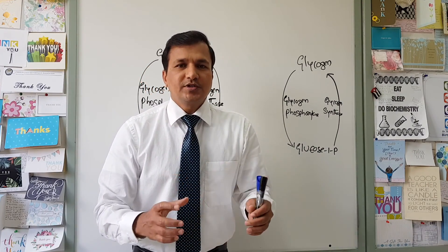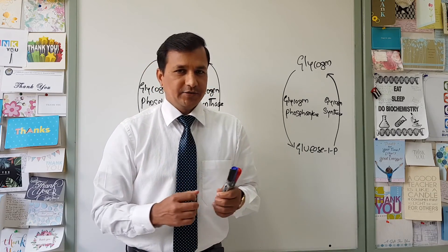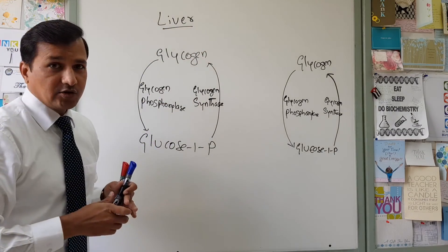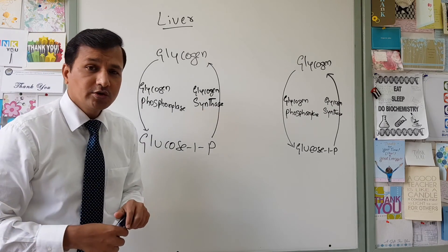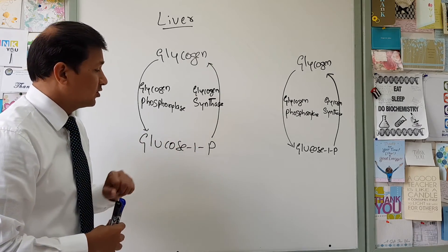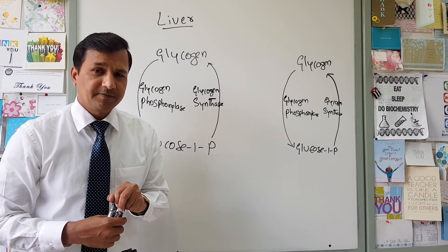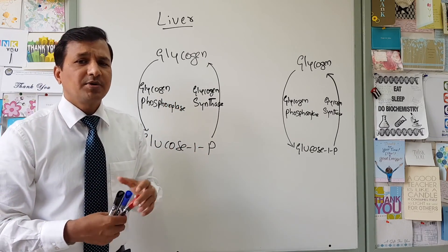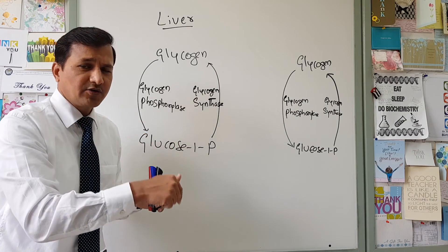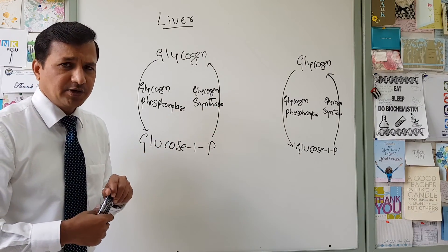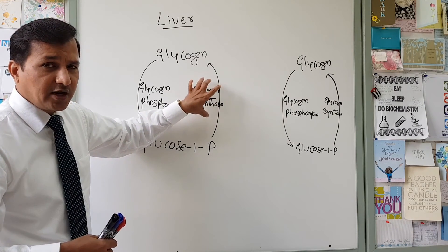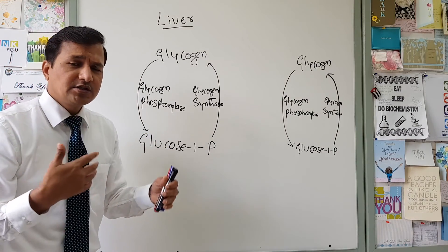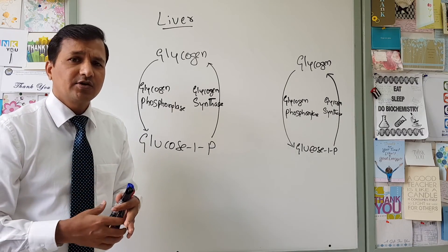We are going to take two tissues to explain allosteric regulation. In the liver, glycogen is stored as glycogen granules, and synthesis comes from glucose 6-phosphate, which is converted into glucose 1-phosphate and eventually into glycogen — a job done by glycogen synthase. Glycogen phosphorylase, the antagonistic enzyme, breaks down glycogen into glucose 1-phosphate, which is converted into glucose 6-phosphate and then glucose in the liver.